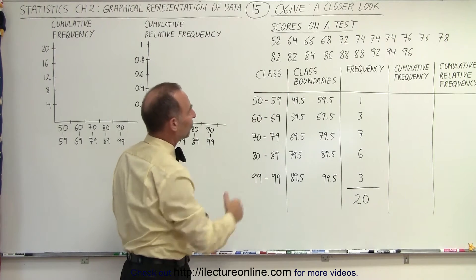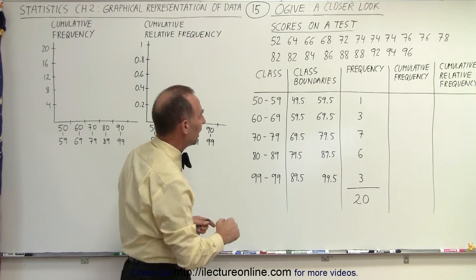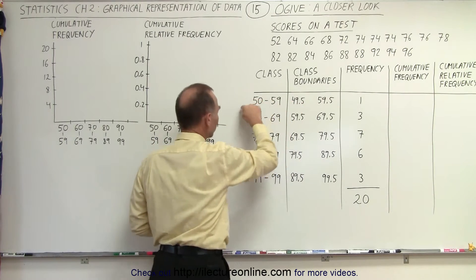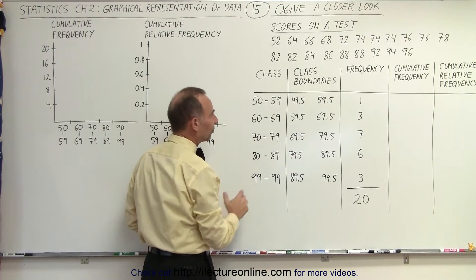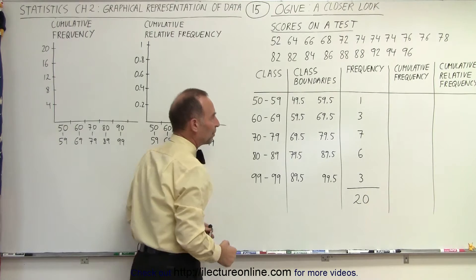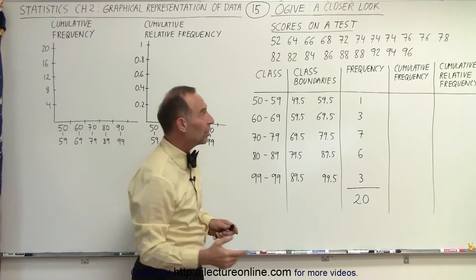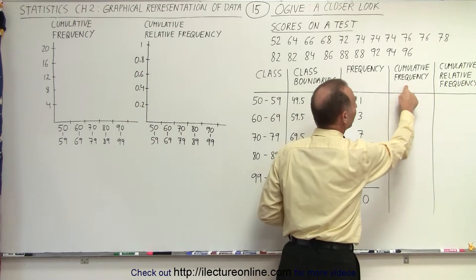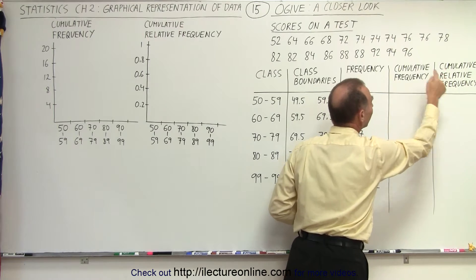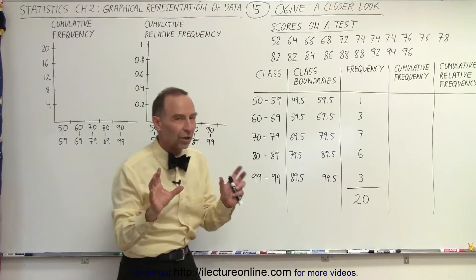Now notice we have some test grades. There's a total of 20 of them and you can see that they fall in five different classes and we've indicated the class boundaries. Now what is the cumulative frequency mean as opposed to the cumulative relative frequency. So that's where the difference comes in.